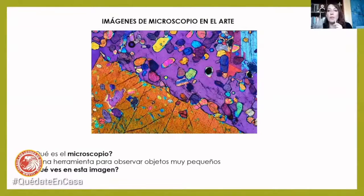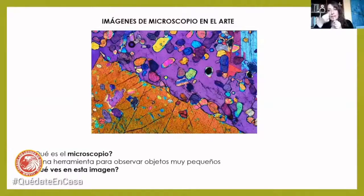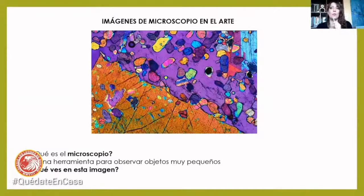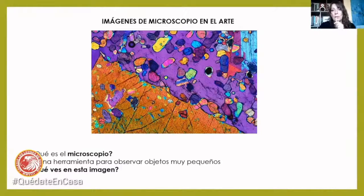Pueden ser orgánicos, como también pueden ser inorgánicos, pueden ser cualquier tipo de objetos, pueden ser líquidos, pueden ser sólidos, y lo importante es que tú lo pones en ese lente y tú puedes ver estas imágenes que estamos viendo aquí a continuación. Si nosotros nos ponemos a pensar, eso parece un dibujo, un dibujo bastante bien hecho, con hartos colores. ¿Qué más podemos ver ahí? Líneas, colores, formas, texturas también, muchas texturas.